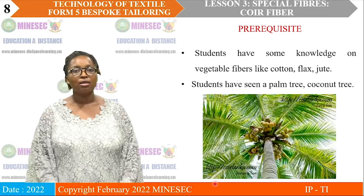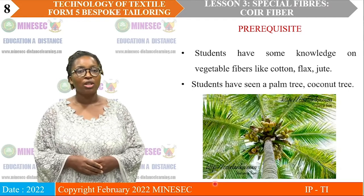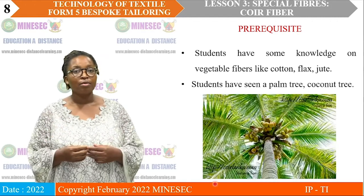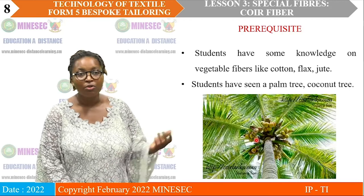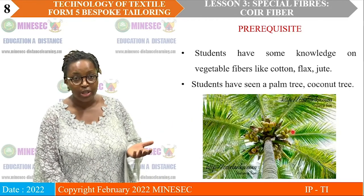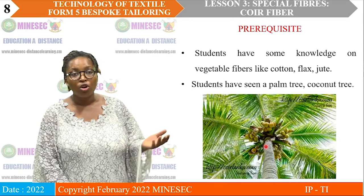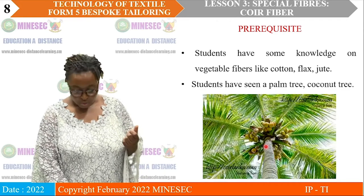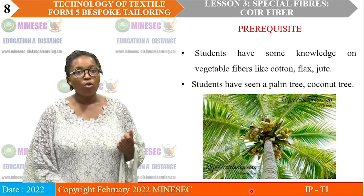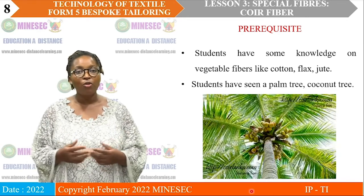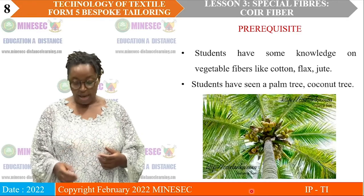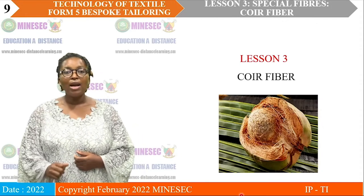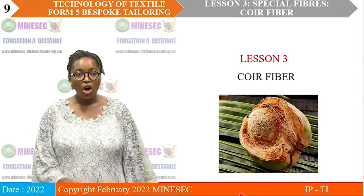Previous knowledge: I know some of you have seen a coconut tree. All of us know about coconut trees — we have coconuts all around our compounds and in the streets. We also have knowledge of vegetable fibers — we have probably seen cotton, flax, and jute. Our lesson today will be on Koi fiber.